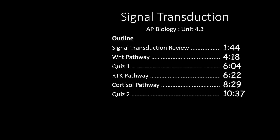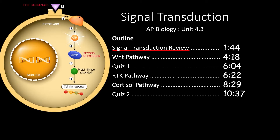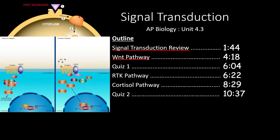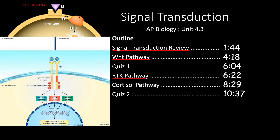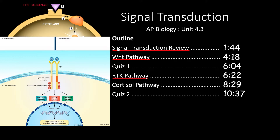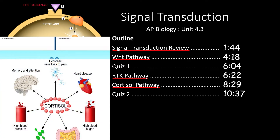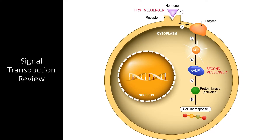This video covers section 4.3 of the AP Biology curriculum. We'll start by reviewing the basics of signal transduction pathways, then dive into complex examples. First, we'll review the Wnt signaling pathway that helps control how cells differentiate. After the first quiz, we'll look at the receptor tyrosine kinase pathway, and finally, we'll see how the stress hormone cortisol can activate a pathway that can literally change the genes your cells express.